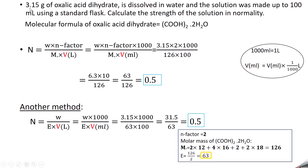Example problem: 3.15 grams of oxalic acid dihydrate is dissolved in water and the solution is made up to 100 mL. Calculate the normality. The molecular formula is (COOH)₂·2H₂O. Using N = (W × N factor) / (molecular weight × V in liters). Since oxalic acid has two replaceable hydrogen atoms, N factor is 2.